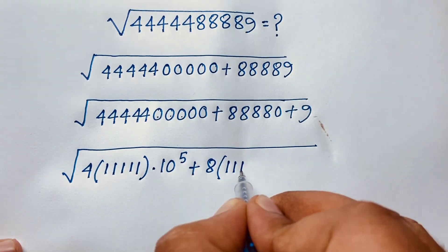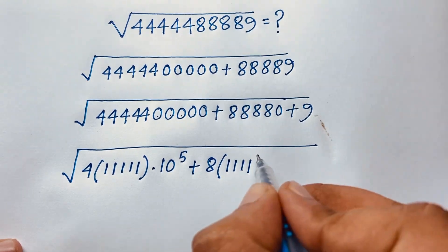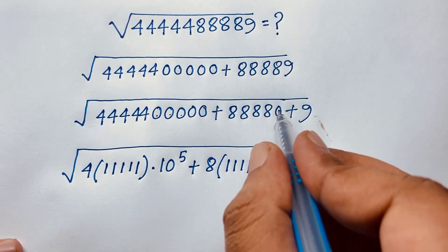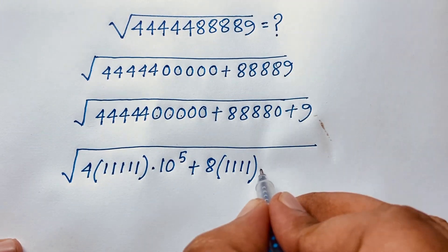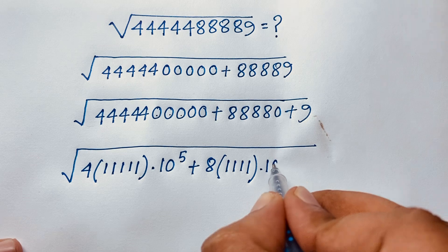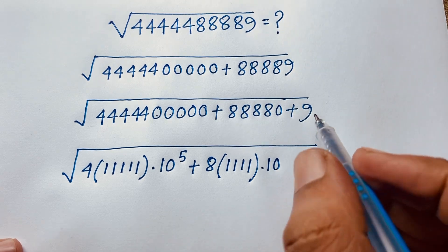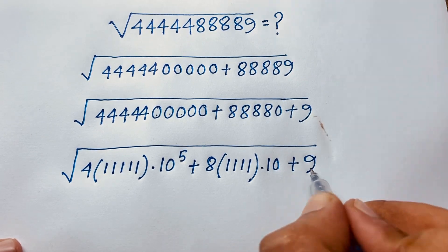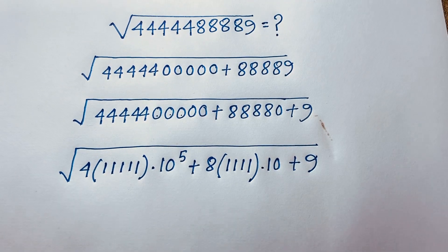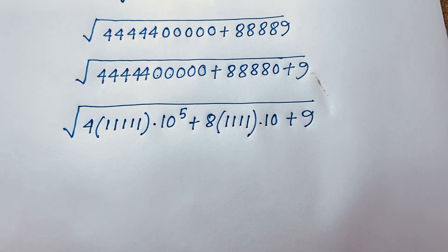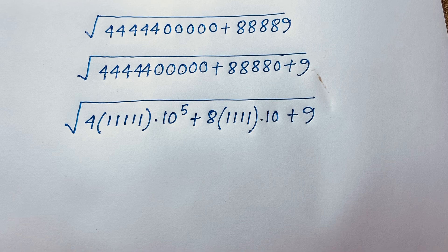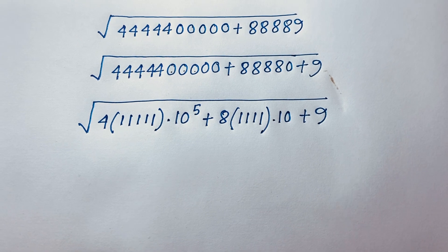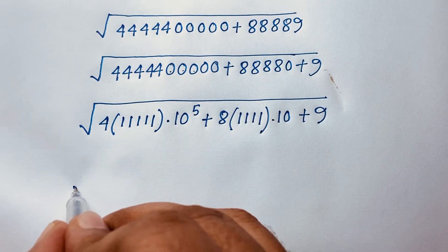...it will be 11111, and here is 10, so it will be 10 to the power... and I can easily see here is plus 9. Now at this moment you can easily see here the square root down.